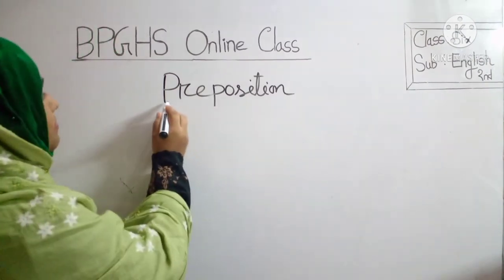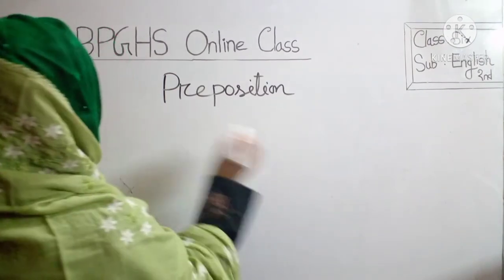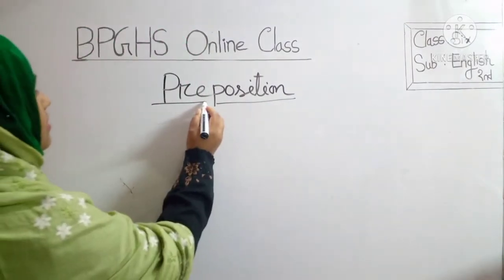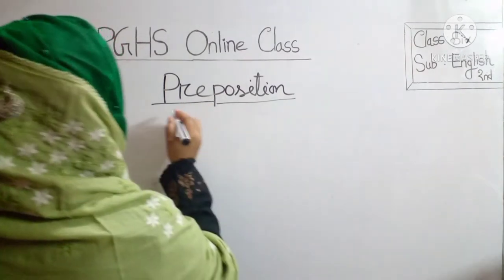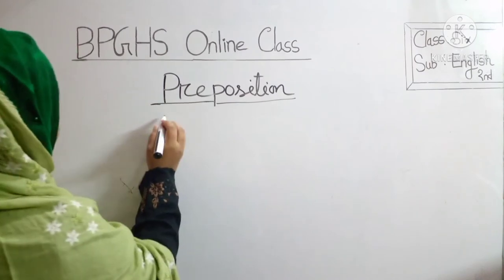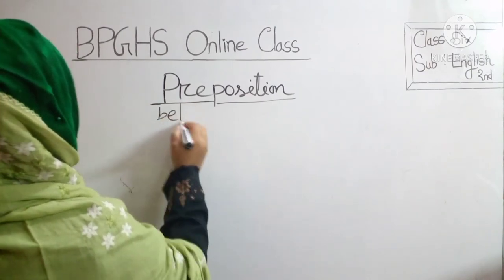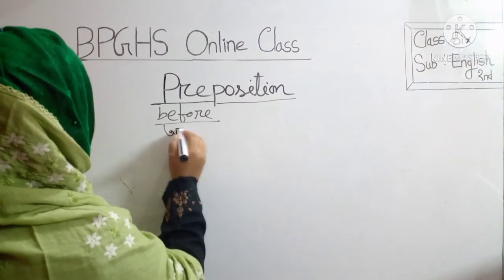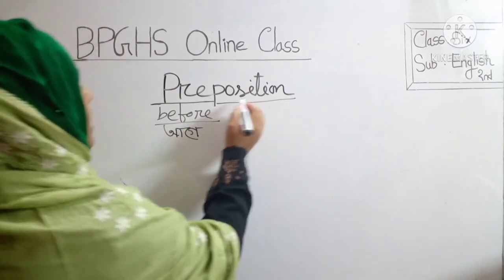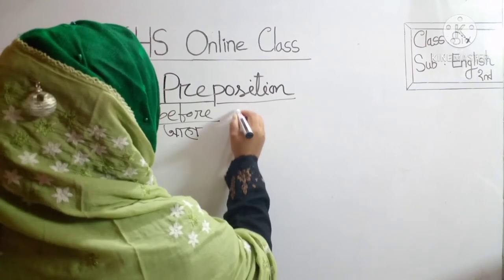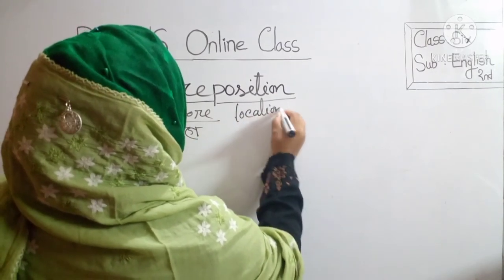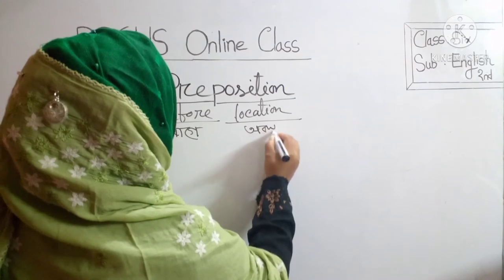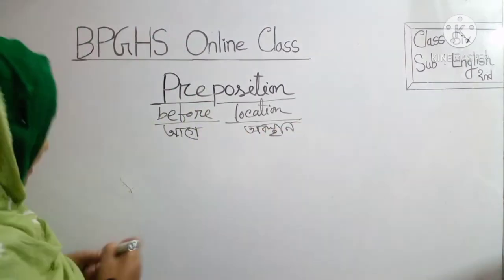Students, this very word 'preposition' is divided into two parts. One is 'pre' and the other is 'position'. 'Pre' in Bengali we can say 'আগে' (agi), meaning 'before' in English. And 'position' means location.